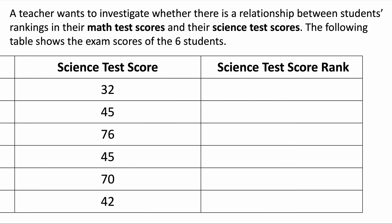Now we'll rank the science test scores. 32 is the smallest with rank one, 42 is second. We have two 45s — these would be ranks three and four respectively, but instead we give them the value halfway between three and four, which is 3.5. So both get a rank of 3.5. Then we have ranks five and six. When two data points share the same value and would occupy positions three and four, you give them both 3.5.